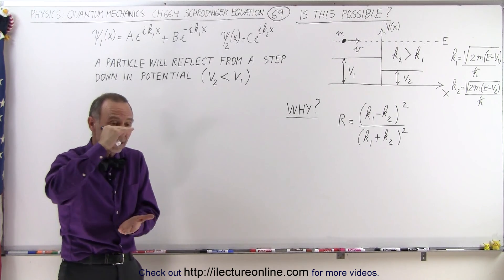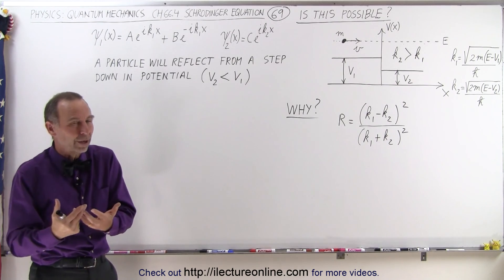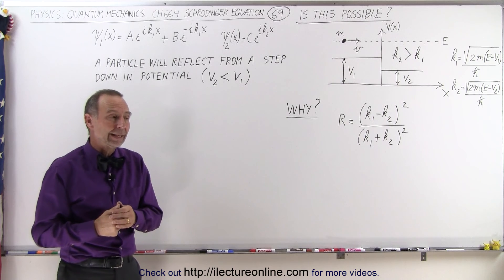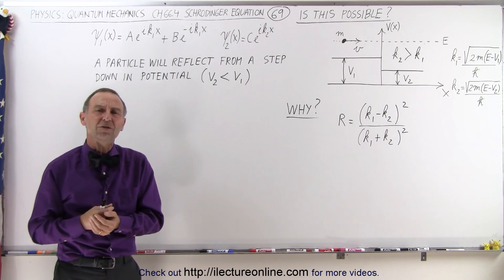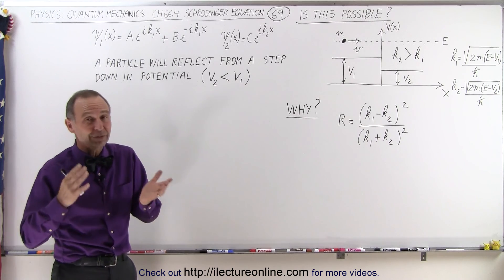As long as the energy of the particle is greater than the energy of the barrier, all particles, 100% of the particles, will make it across the barrier. In quantum mechanics that's not the case. A portion of the particles will reflect. So at this point we're kind of accepting that.